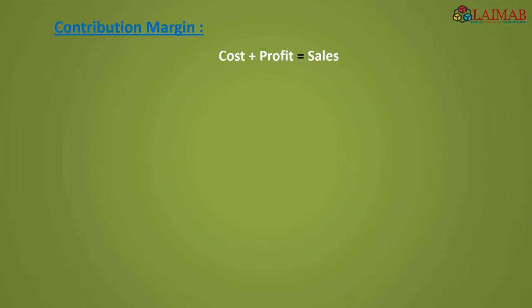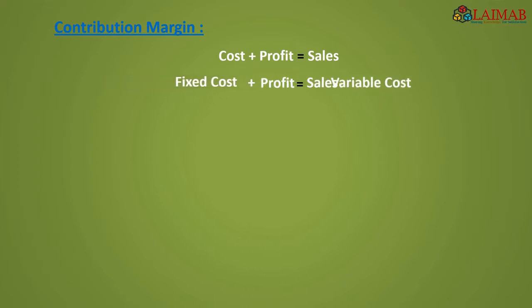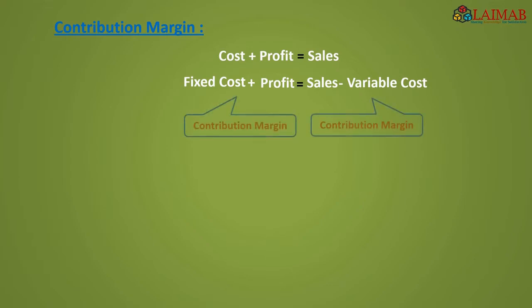We know this simple equation: cost plus profit equals sales. Cost is generally divided into fixed cost and variable cost, so the equation is fixed cost plus variable cost plus profit equals sales. If we rearrange, then fixed cost plus profit equals sales minus variable cost. This is called contribution margin.